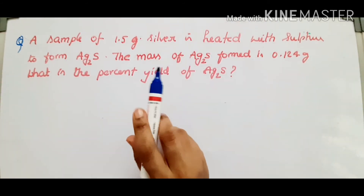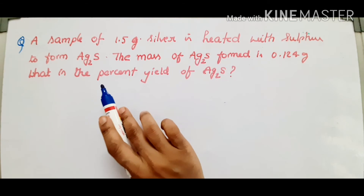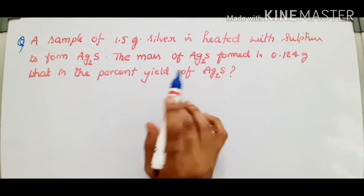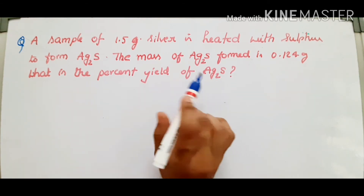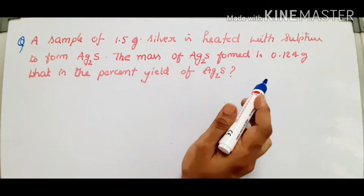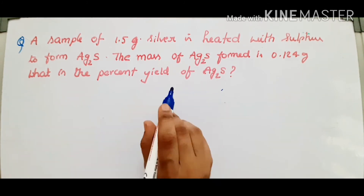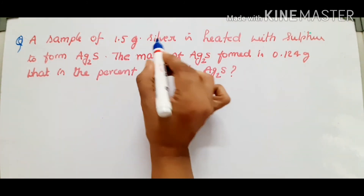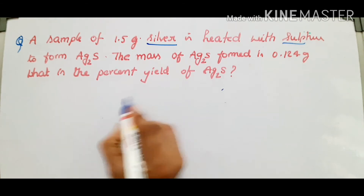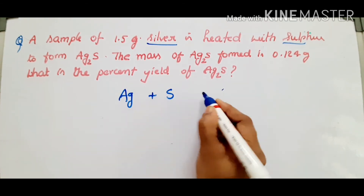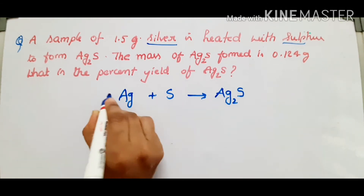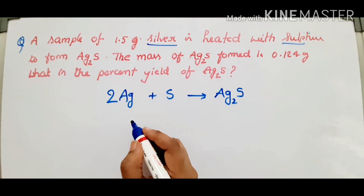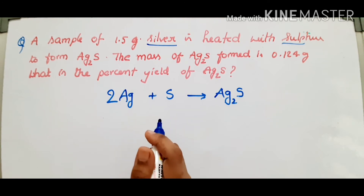Example 2: A sample of 1.5 grams of silver is heated with sulfur to form silver sulfide. The mass of Ag₂S formed is 0.124 grams. What is the percent yield of Ag₂S? Write down the equation: 2Ag + S → Ag₂S. Balance it: 2Ag. Now do mass and moles interpretation.